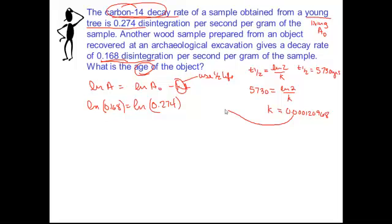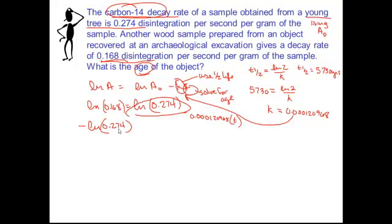So now you can plug this in for K and solve for age. So minus 0.000120968 times T. So since this is where the variable is, I need to subtract this from both sides. So minus the natural log of 0.274. I'll do that. And that's equal to 0.000120968 T. And I don't have that specific result from a calculation. But then you would divide both sides by this number.